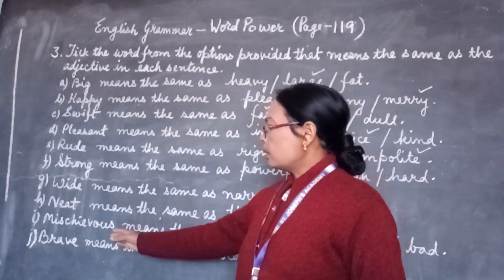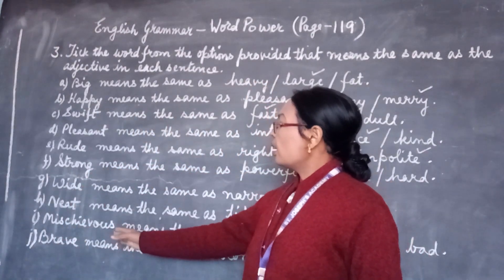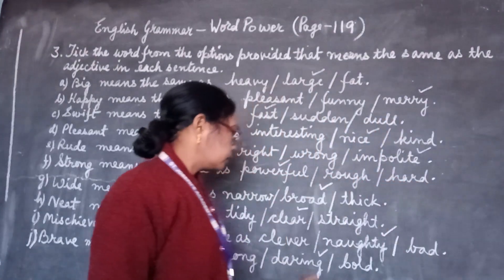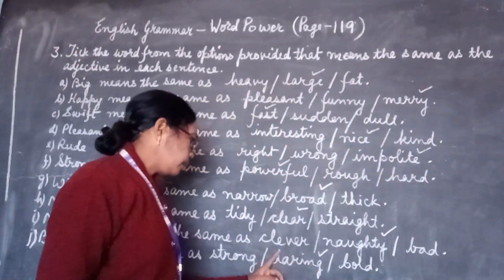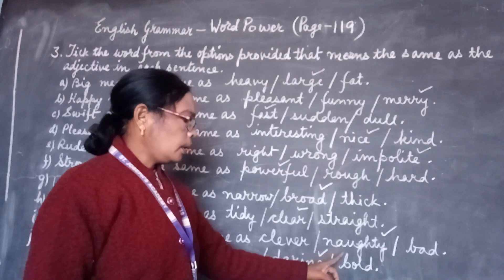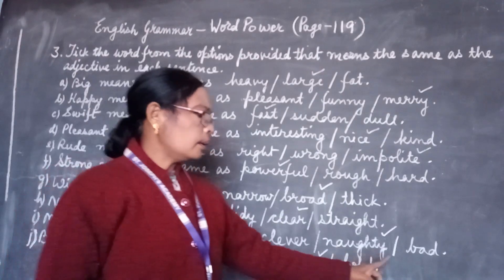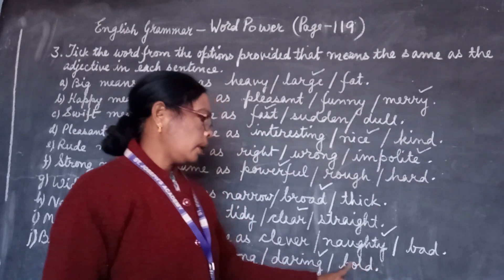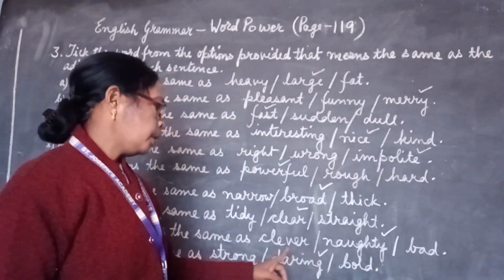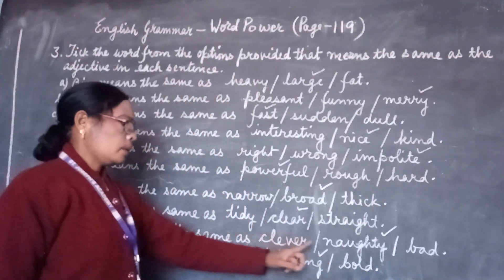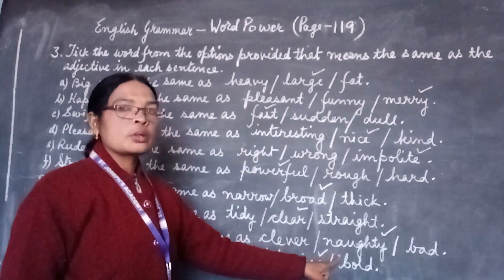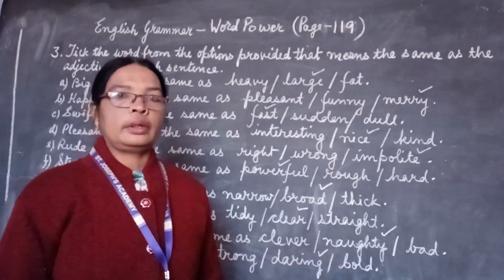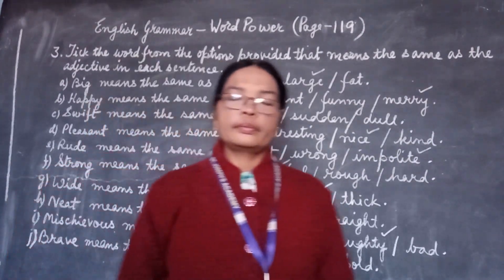Now we will come to number I. 'Mysterious' means the same as — the options are silent, clever, naughty, and bad. Among these, the meaning of mysterious is naughty. So we will put a tick mark on the word naughty.